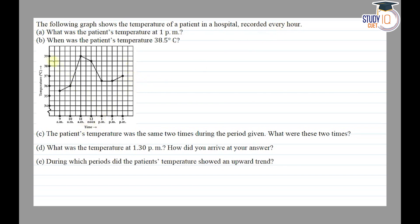The x-axis shows time and the y-axis shows temperature of a patient in a hospital. Part A asks: what was the patient's temperature at 1 PM? We will see the graph at 1 PM and check the point on the y-axis. It is between 36 and 37, and since it is in the middle, it will be 36.5 degrees Celsius.